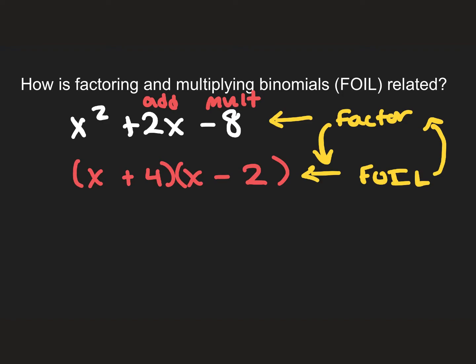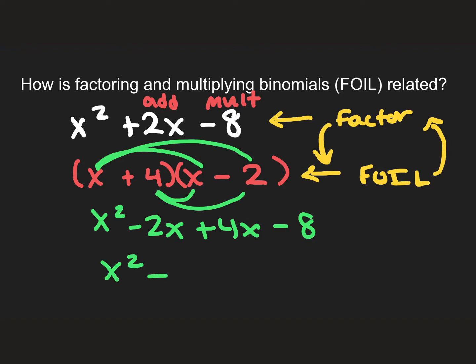And we can use foiling to check our factors. To do so, I multiply, so I have x² - 2x + 4x - 8, which simplifies to x² + 2x - 8. And since it's the same, we can assume that it checks our answer. So we can use this as a check.